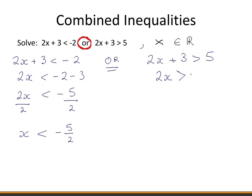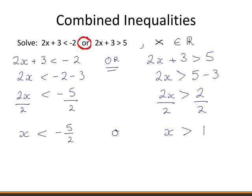Subtracting 3 from both sides of the second inequality gives us this. Then dividing both sides by 2, we get that x is less than −5/2 or x is greater than 1.